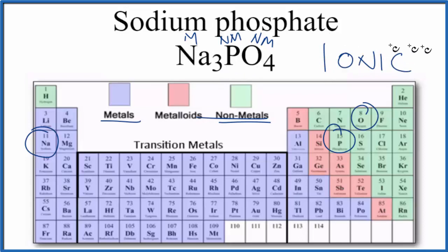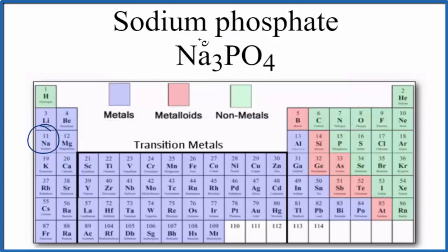So Na3PO4, sodium phosphate, is ionic. Because it's ionic, we should look at the charges. Sodium is in group one, so it'll have a one-plus charge. That means each sodium ion has a one-plus ionic charge.